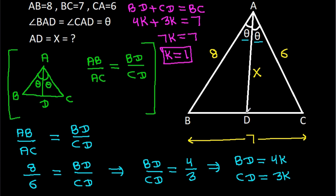So BD is 4k, that means BD equals 4, and CD is 3k, that means CD equals 3.